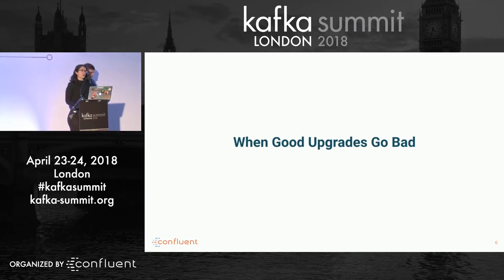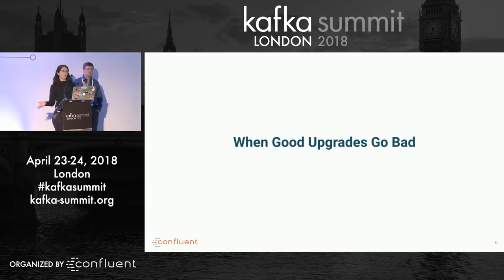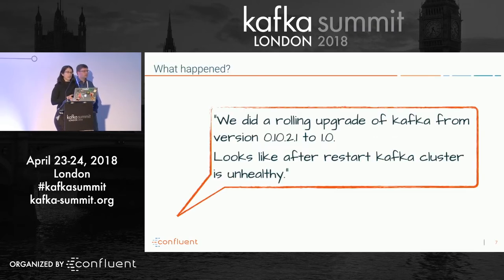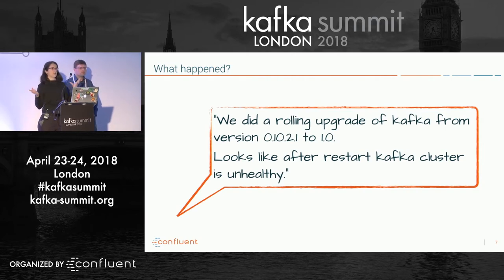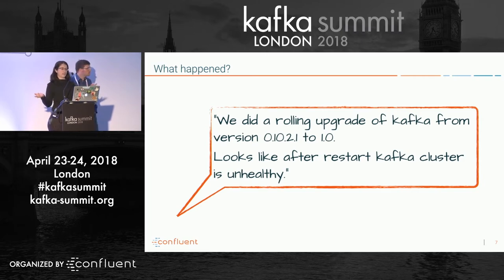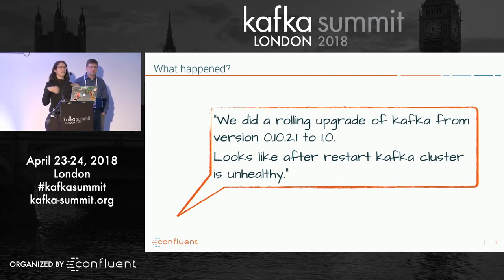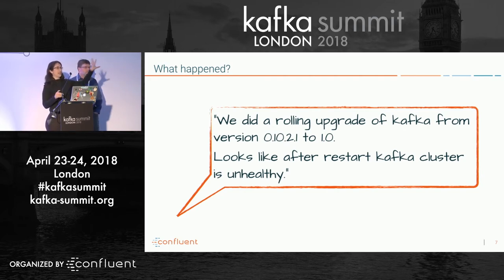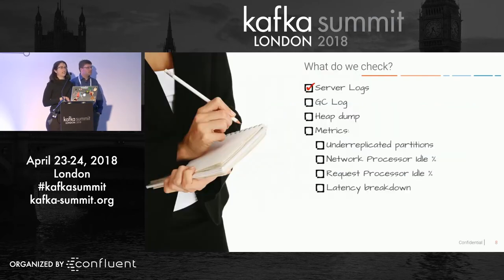Upgrades in Kafka are usually no big deal — Kafka has rolling upgrades with very detailed instructions and documentation, so we normally don't expect many issues. But every once in a while we get a support ticket that looks something like this: a customer quote where the specific versions don't matter much. It happens across every two pairs of Kafka versions. The actual ticket reads: 'We upgraded and things don't look okay — now what?'